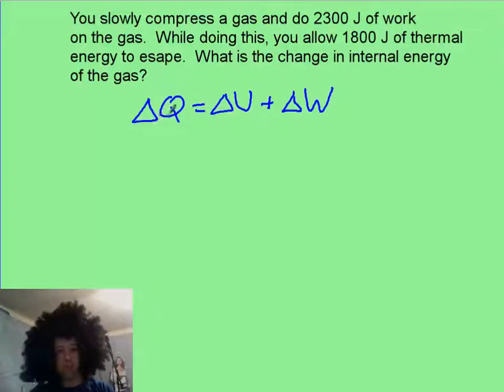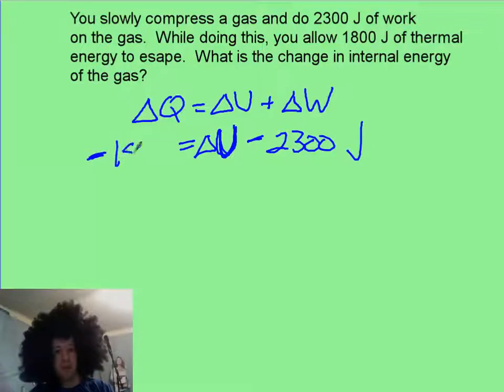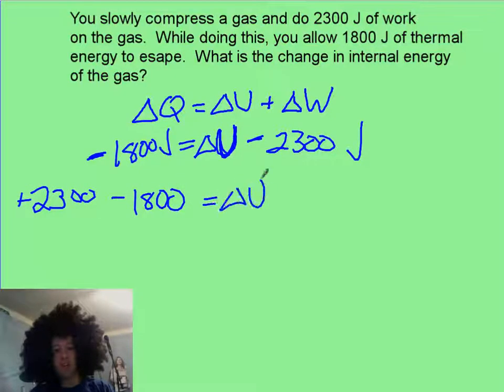You should have started with your first law equation, and then you look at this, and you say that you compress a gas, and you do work on the system. So that is going to be negative work. And then, you're looking for the change in internal energy, which is relating to the temperature, and your delta Q, you let 1800 joules escape. So since it's escaping, that's negative 1800 joules. You rearrange, and you've got a plus 2300, minus your 1800, and that's going to leave you with a plus 500 joules.